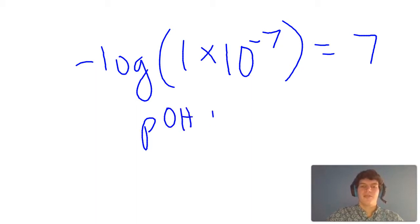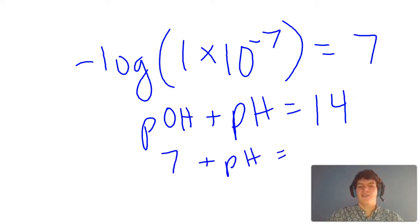pOH plus pH equals 14. So 7 plus pH equals 14. Our pH value is going to be close to 7.